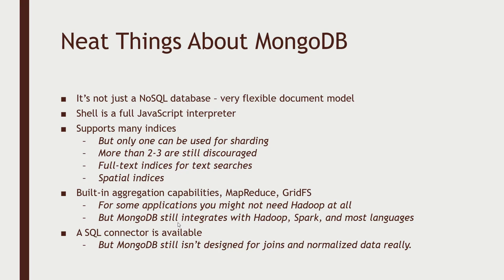There are some very neat things about MongoDB too. The big plus is that it's not just a NoSQL database — it can store pretty much anything you want. It also has a shell with a full JavaScript interpreter, so you can run JavaScript functions across your entire MongoDB database. It supports many indices, including full-text indices for efficient text searches. You can also set up spatial indices to do searches across latitudes and longitudes — for example, finding database objects that intersect a given position.